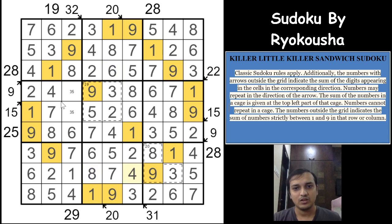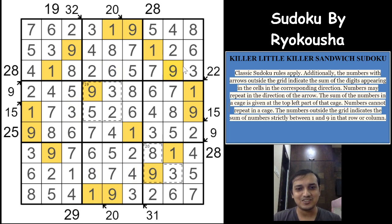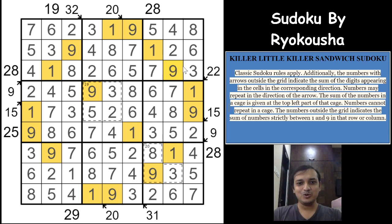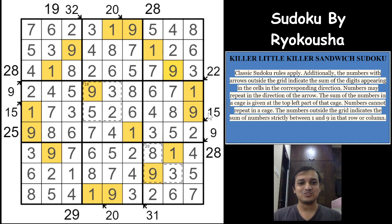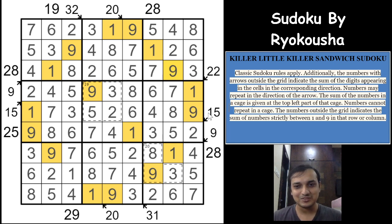What a tremendous and insane puzzle — you really have to sweat a lot to complete it. All sandwich sum clues are fulfilled, and the Little Killer clues have driven the final deductions. Hats off to the setter, Rokosha — excellent setting. I really enjoyed covering this puzzle with its great combination of three Sudoku variants. I hope you enjoyed the video. Do like and comment if you want us to solve other Sudoku variants or puzzle genres, and please don't forget to subscribe to the channel. Thank you!